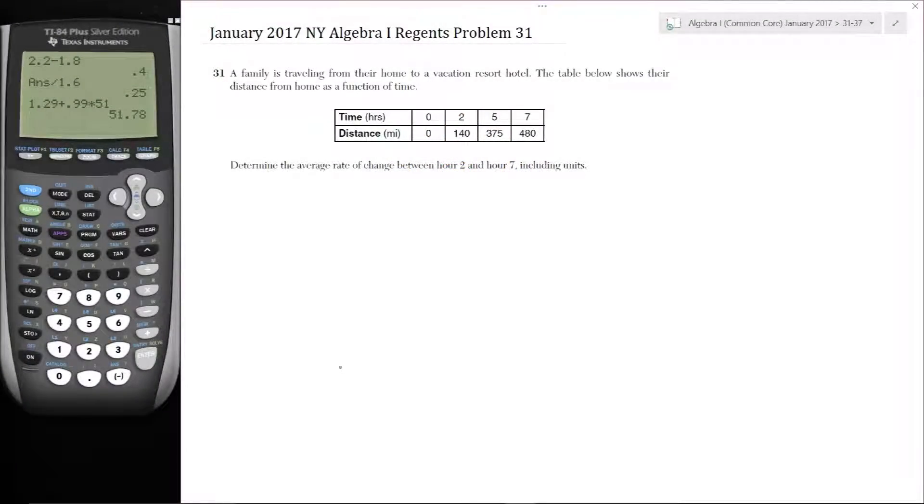Here's problem 31. A family is traveling from their home to a vacation resort hotel. The table below shows their distance from home as a function of time. Time in hours: 0, 2, 5, 7 and distance in miles: 0, 140, 375, 480. Determine the average rate of change between hour 2 and hour 7, including units.